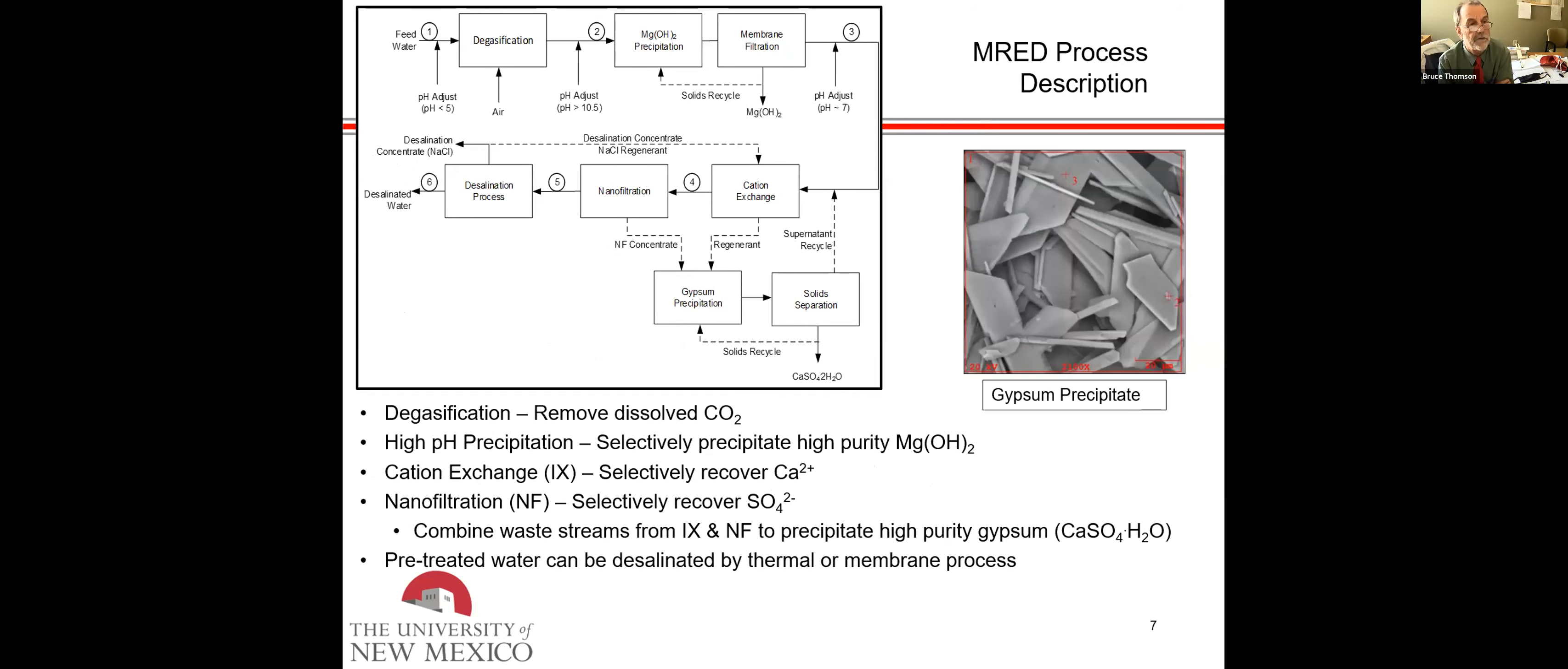Here's the process. The first step involves degasification. The purpose is to remove dissolved CO2. If we have CO2 in the water, it limits the purity of the minerals we can recover. Then we raise the pH to about 10.5 or 11, and we can recover high purity magnesium hydroxide. It's a commodity mineral used in cement, soil amendments, and things like that. It's a low value commodity mineral, but by separating it from the brackish water, we've reduced the volume.